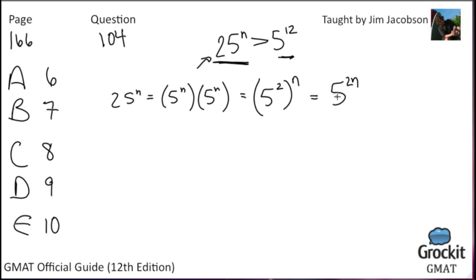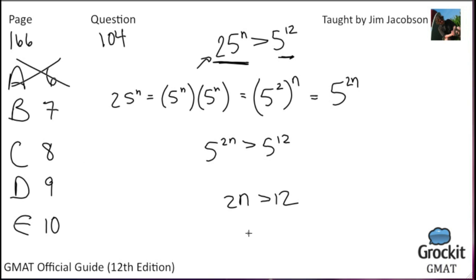So we want to know the smallest integer n for which 5 to the 2n is greater than 5 to the 12. That means we need 2n greater than 12. If n is 6, then 2n equals 12, so it would be equal, not greater. The next highest integer is 7, answer choice B. Properties of exponents are super important on the GMAT — you need to be very comfortable with them.